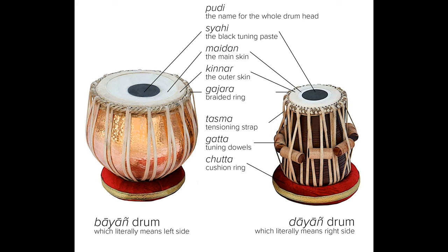Sayahi: ink spot — the black spot on the center of the pudi, made from a mixture of iron filings, glue, and rice paste, which helps produce the distinct tonal quality. This is also called gob, represented by 'G' for fingering notation.